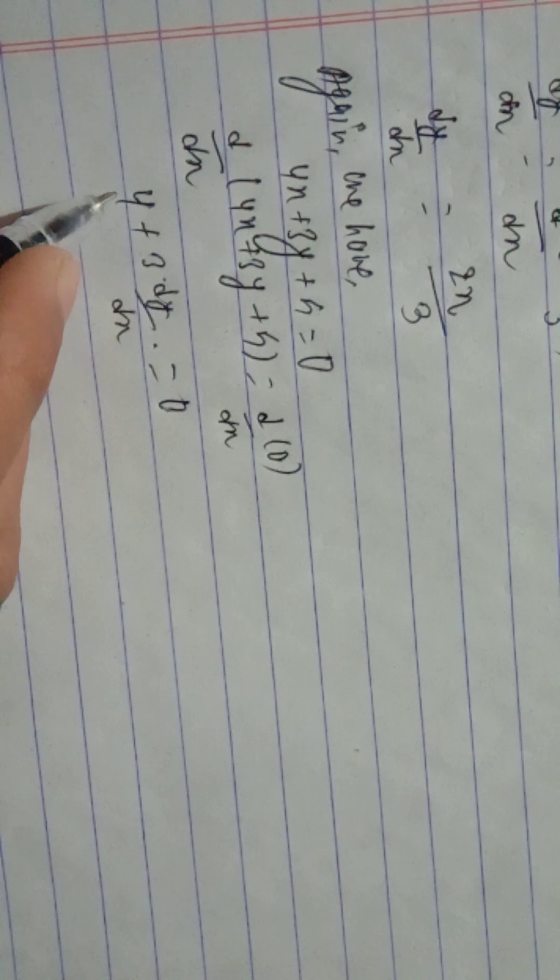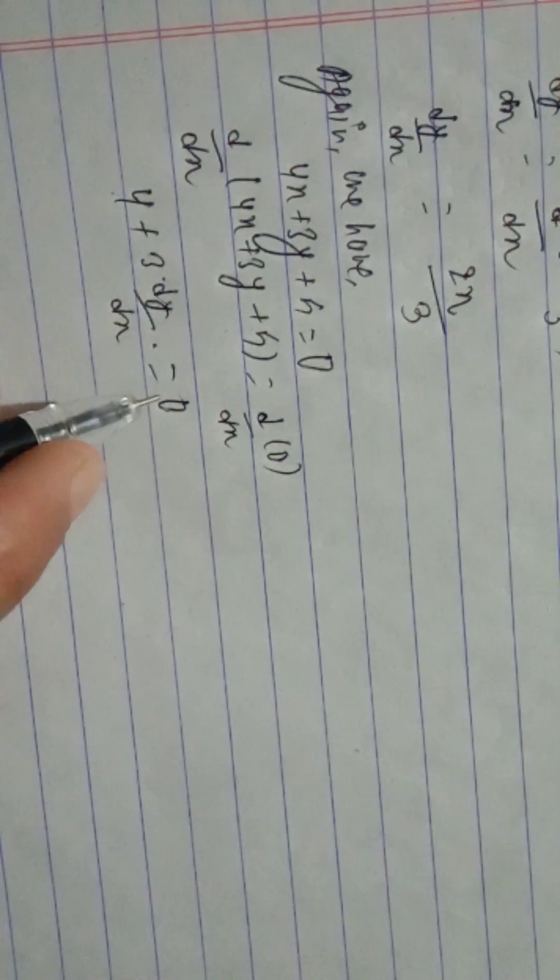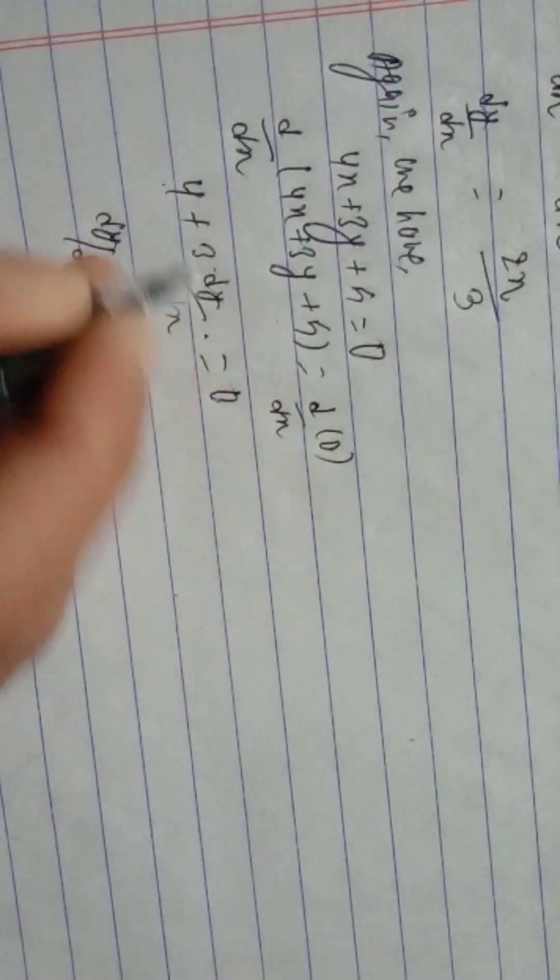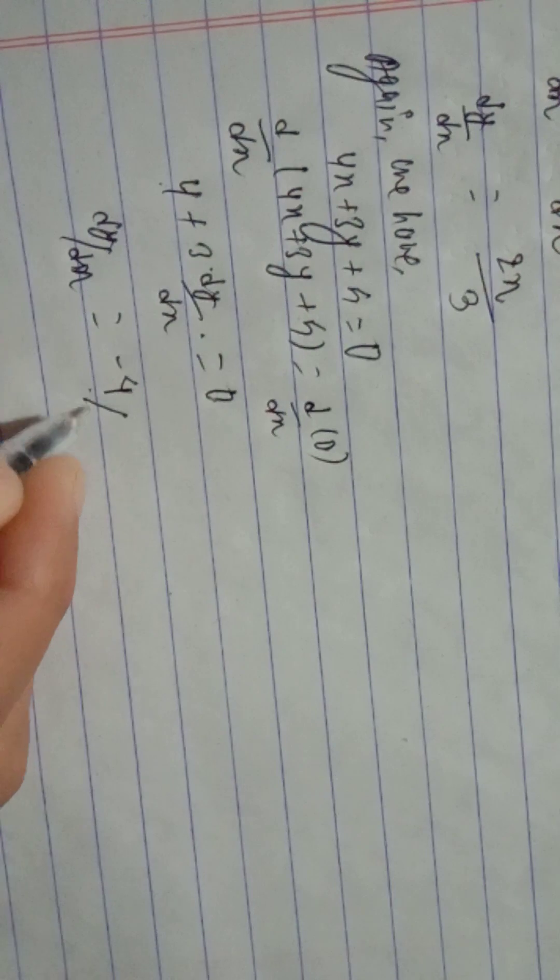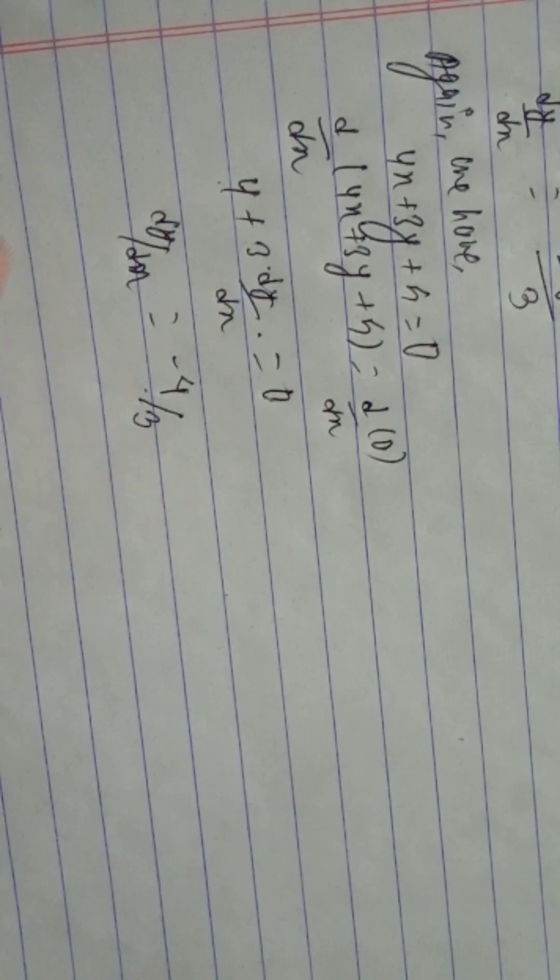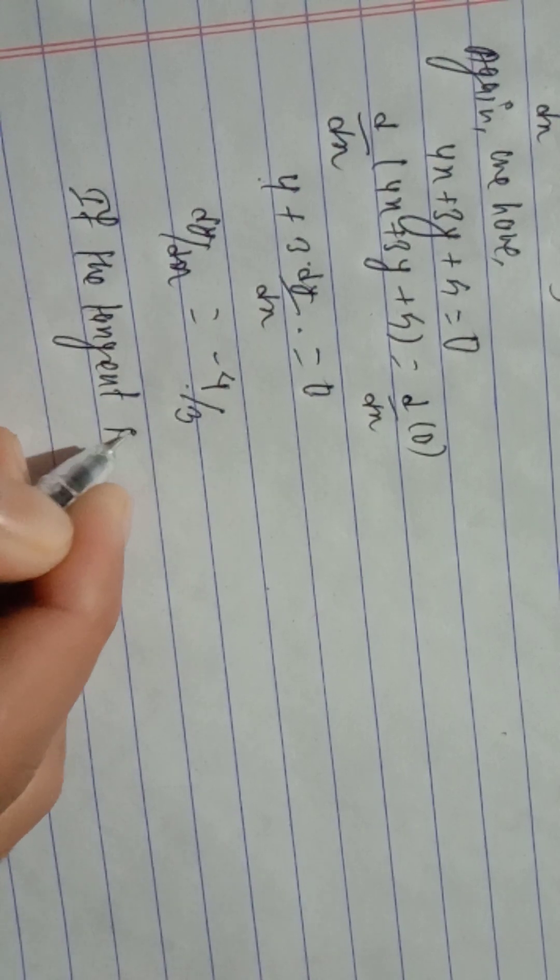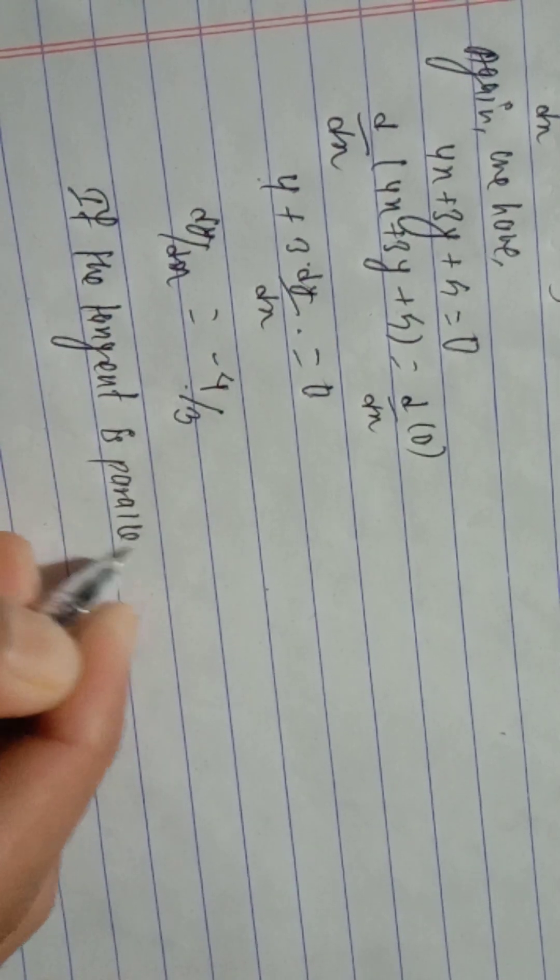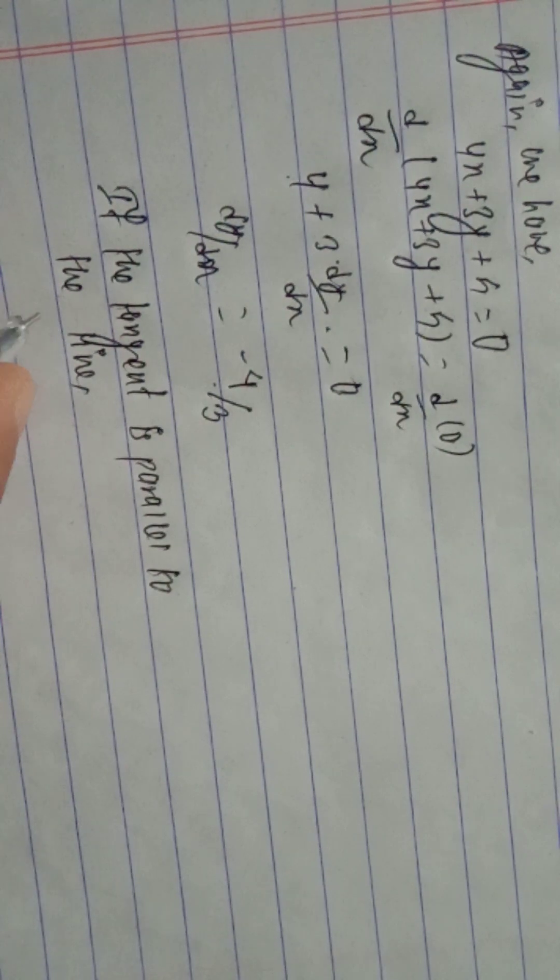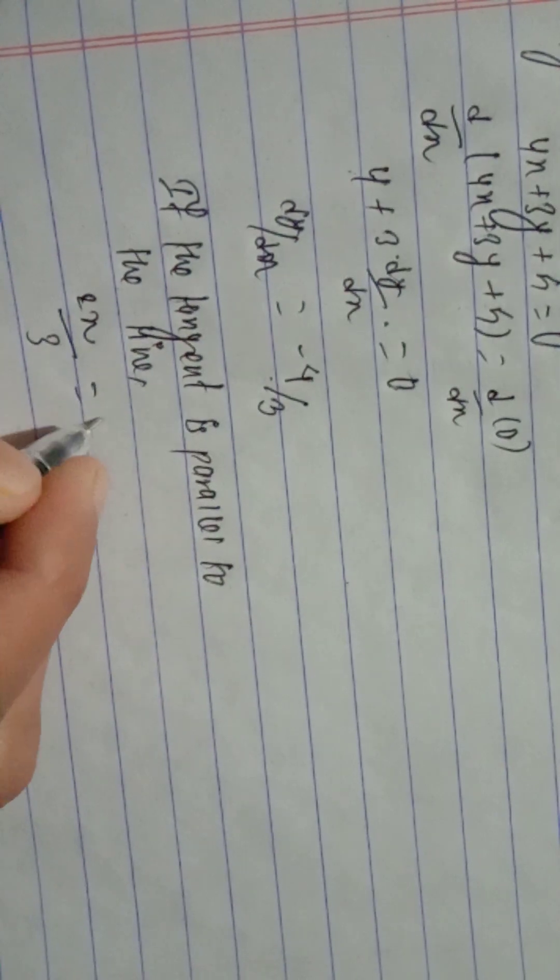The derivative of 4x is 4, the derivative of 3y is 3 dy by dx. So, 3 dy by dx equals minus 4, giving dy by dx equals minus 4 by 3. If the tangent is parallel to the line, then 2x divided by 3 equals minus 4 by 3.